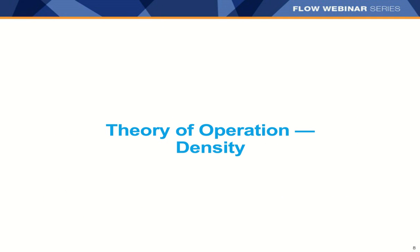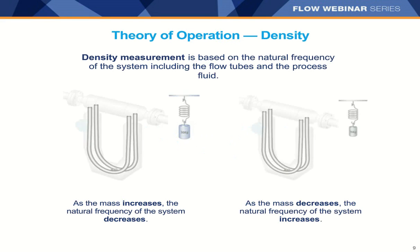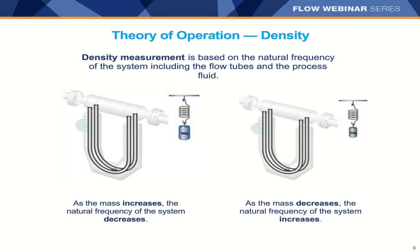Density is based on the natural frequency of the system, including the flow tubes and the process fluid. As mass increases, the natural frequency decreases; as mass decreases, the natural frequency increases. If something very dense comes through the tubes, it slows the frequency down; something with less density speeds the frequency up. It's an inverse relationship.